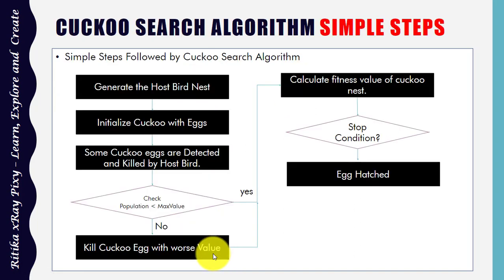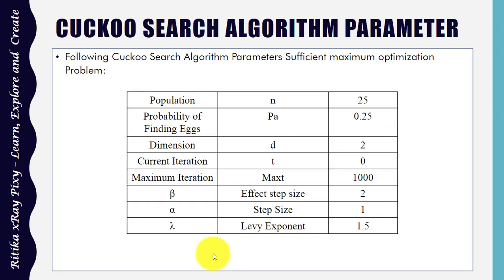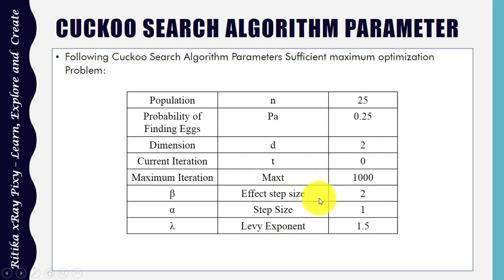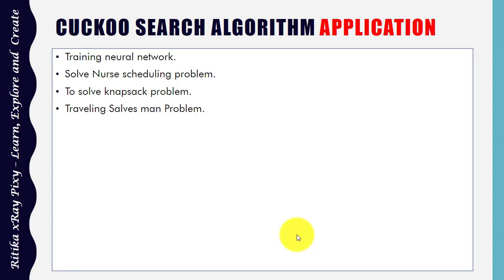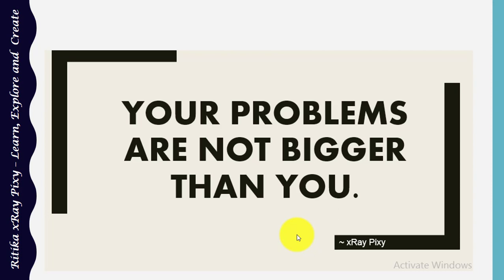The parameters used in the Cuckoo Search are sufficient for most optimization problems. n, the population of host nests, can be set to 25. The probability of finding an egg by the host bird is pa = 0.25. Dimension is 2, current iteration counter starts at 0, maximum iterations is 1000, step size is 2 (which affects the step size during random walk), and the Lévy exponent is also defined. This algorithm is used for training neural networks with better performance, for solving the nurse scheduling problem, and in the Traveling Salesman Problem.